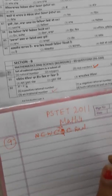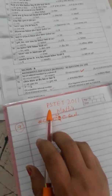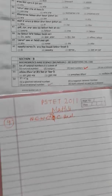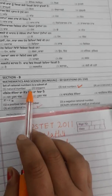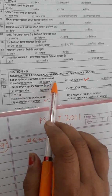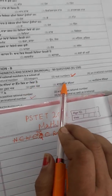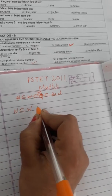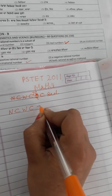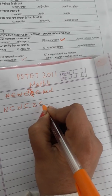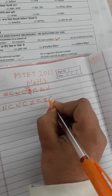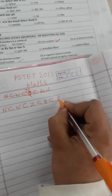Today we will solve PTET 2011 math. The first question is: the set of rational numbers is a subset of which — natural numbers, integers, real numbers, or irrational numbers? We know that natural numbers are a subset of whole numbers, whole numbers are a subset of integers, integers are a subset of rational numbers, and rational numbers are a subset of real numbers.